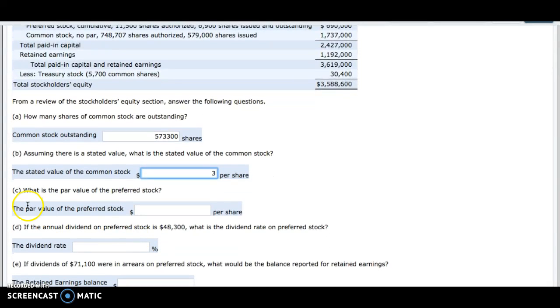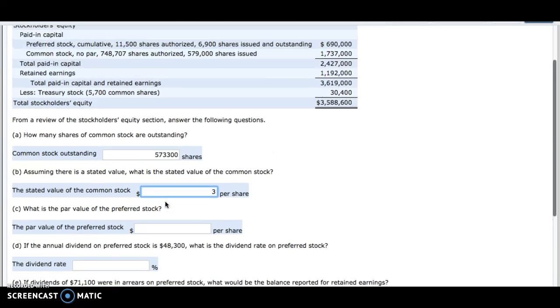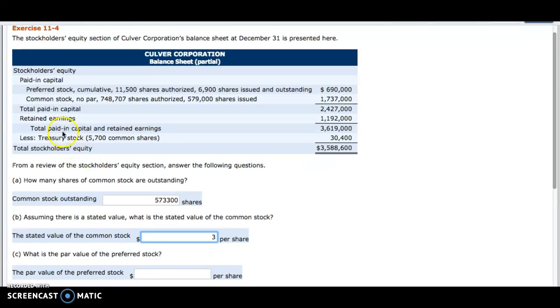The third question here is, what is the par value of the preferred stock? So we'll look at our preferred stock here. To find out the par value, since there is no paid-in capital in excess of stated value account for the preferred stock, we're going to assume that the 6,900 shares issued were sold for their par value.